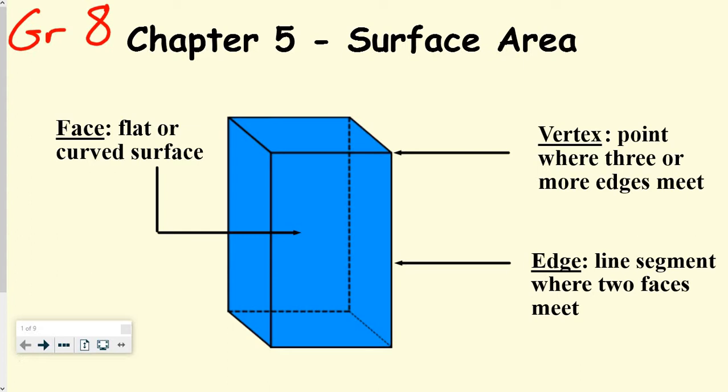For the vertex, it's a point where three or more edges meet. But if it's just two, it would just be an edge or a line segment where two faces meet. So if there's three edges, it's a vertex. If it's two, it's an edge.